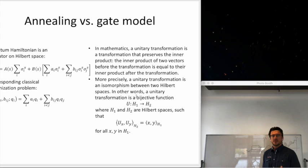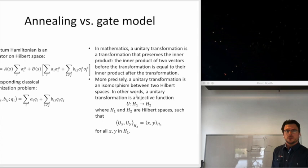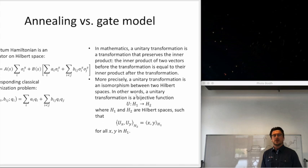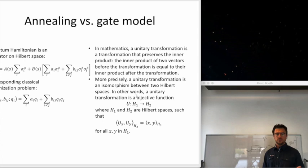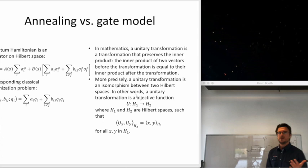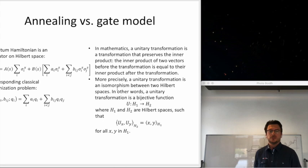Gate model or universal quantum computers are what everyone is waiting for. Currently we have about 70-72 qubits for gate model chips and about 2000 for quantum annealing systems. Different implementations exist: superconducting qubits, ion traps, photonic quantum computers. Independent of implementation, they all do the same: initialize quantum registers in a well-defined state (all zeros, achieved by cooling atoms down), then apply unitary transformations.